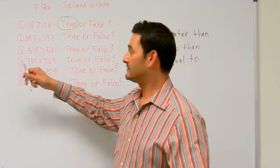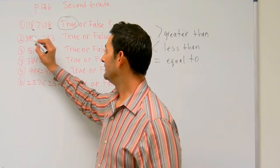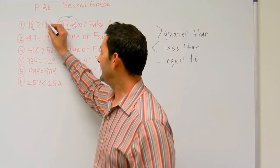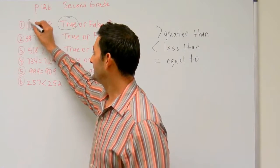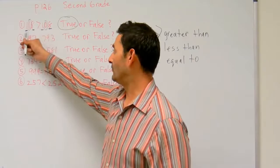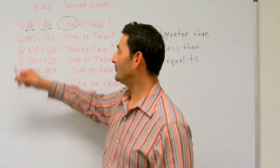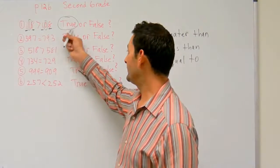And the way we know that is by place value. The ones digit is the same. The tens digit is not the same. The one in the hundreds place is the same. So here we have a one, here we have a zero. Which one is greater? That's greater. So it's true.